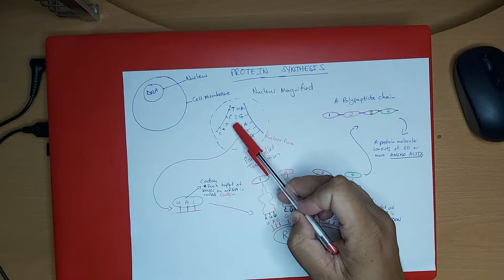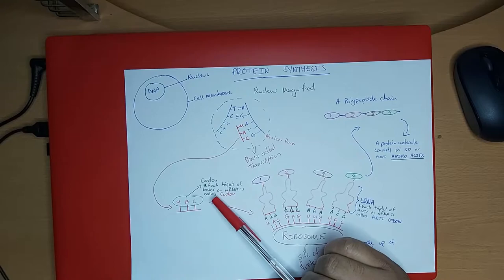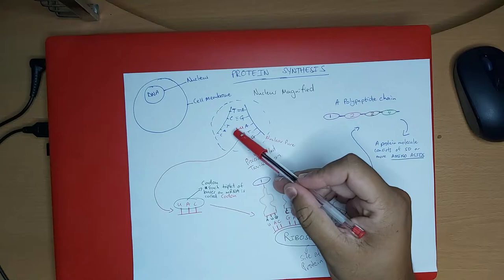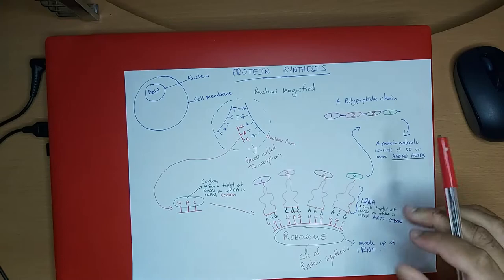In the mRNA molecule, a triplet of these bases is called a codon. So each triplet of bases on the mRNA is called a codon. This matching of mRNA bases to the DNA bases is a process called transcription.